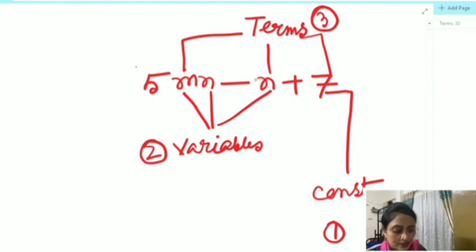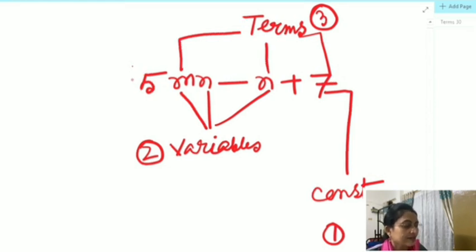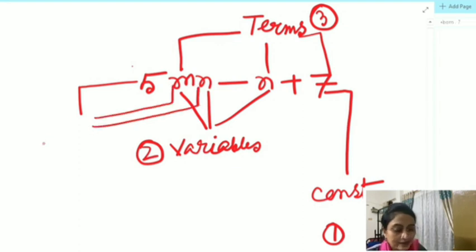Next one is our factor. In 5mn, this 5, your m, and this n—these are the factors.